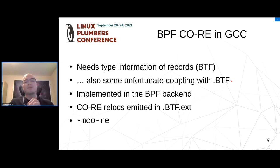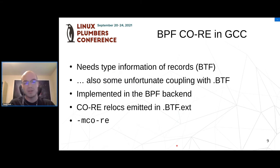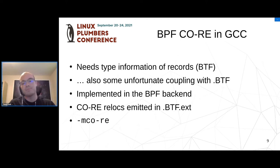There is some coupling with the .BTF information. The CO-RE relocations go into a new section called .BTF.ext, but the encoding of which field of the structure is being accessed is stored as a string in the regular .BTF section string table. This means any time we generate these relocations, we have to delay output of the debug info until after all relocations are generated, which turns out to be pretty late in the compilation process. The option controlling all of this is -mcore, and by default, if you're generating BTF for a BPF program, the CO-RE information is generated automatically — it's implied as part of the debug information.